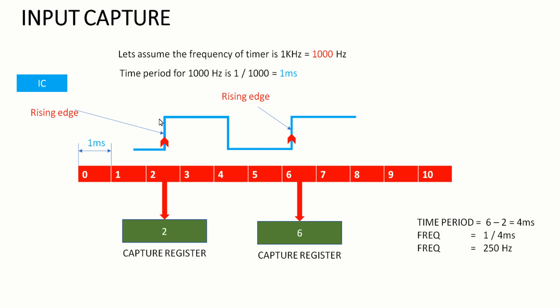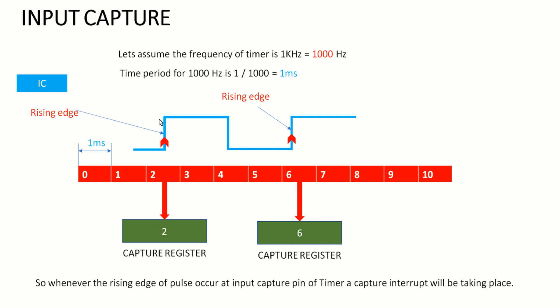So this is the frequency of the pulse given at the input capture pin of the microcontroller. Whenever a rising edge pulse is given to the input capture pin, the timer peripheral interrupts the processor with an interrupt called the timer input capture interrupt. Like a timer interrupt, this input capture interrupt interrupts the processor, and using the interrupt handler we can perform all the calculations for measuring the frequency and time period of the signal. This is the working principle of the timer input capture peripheral in a microcontroller.